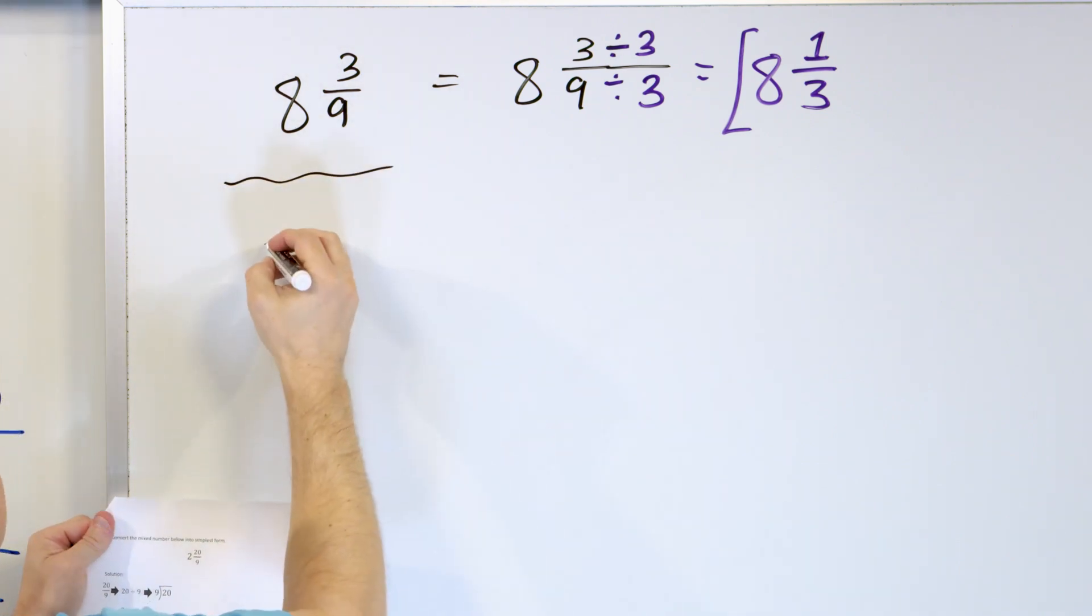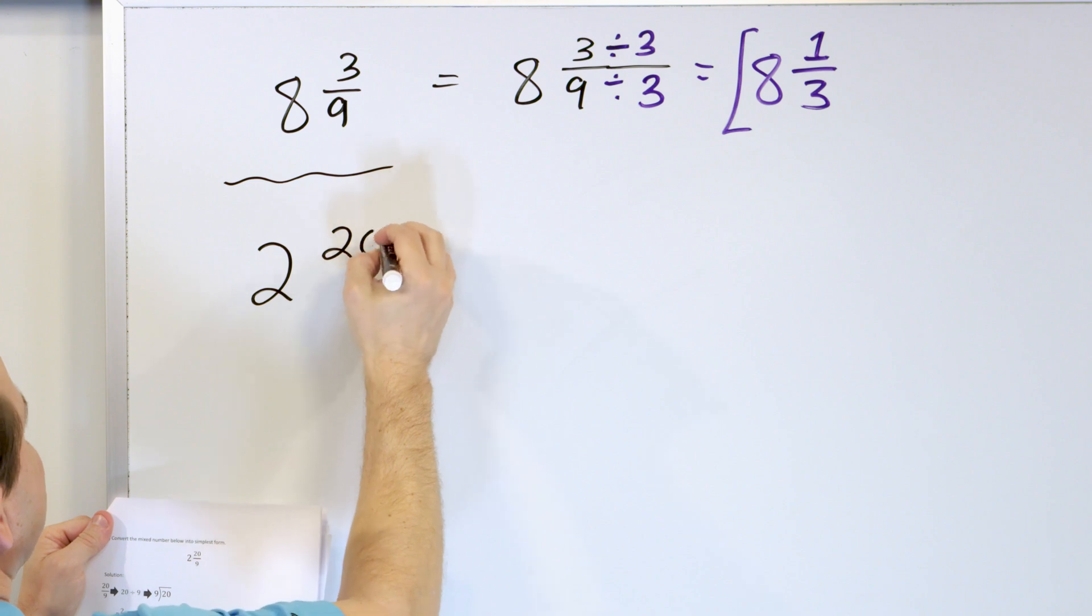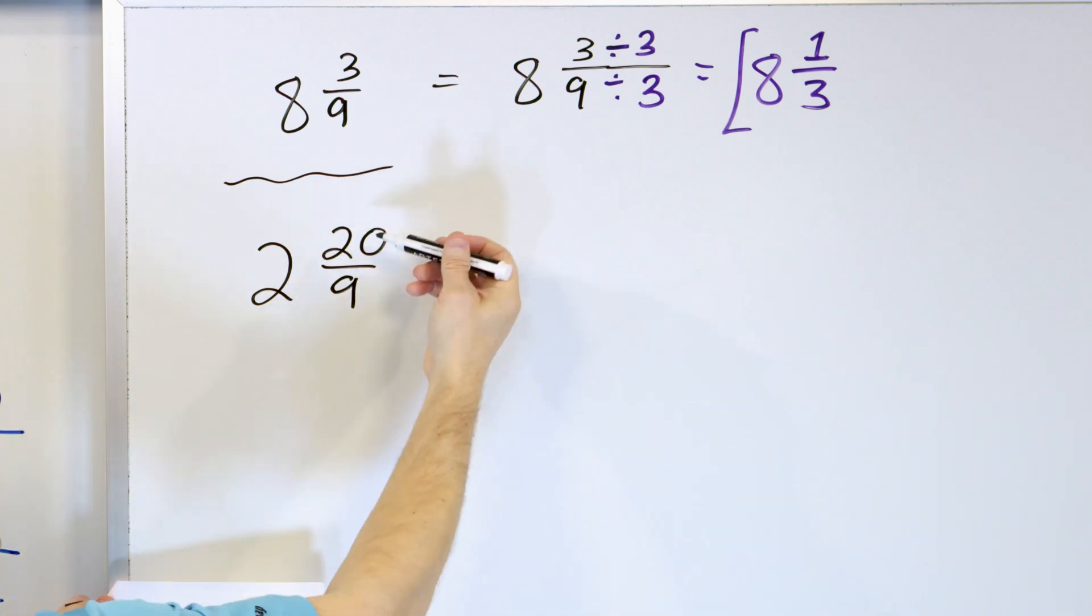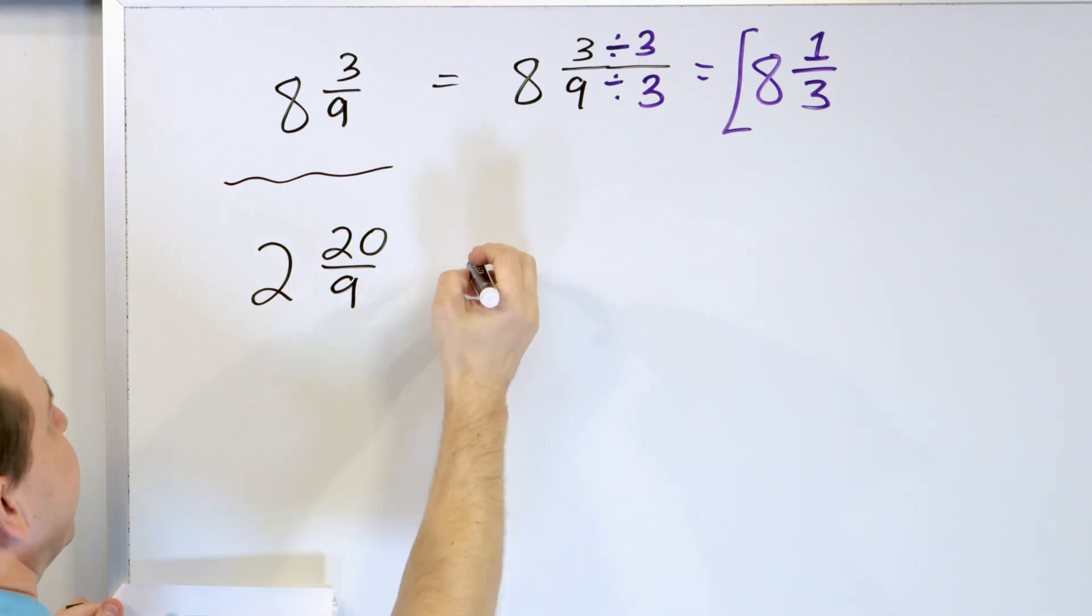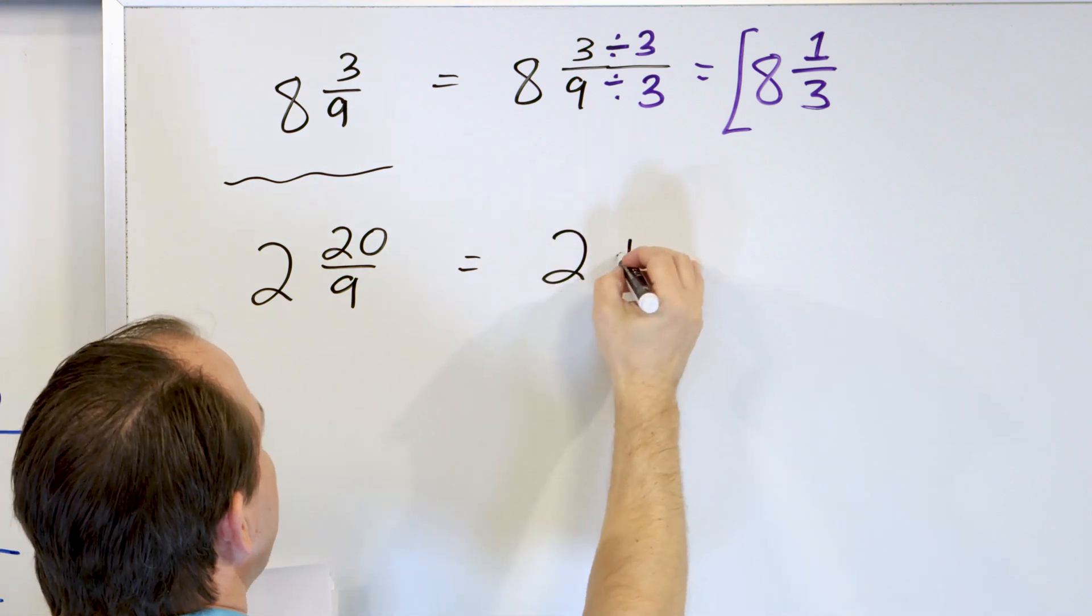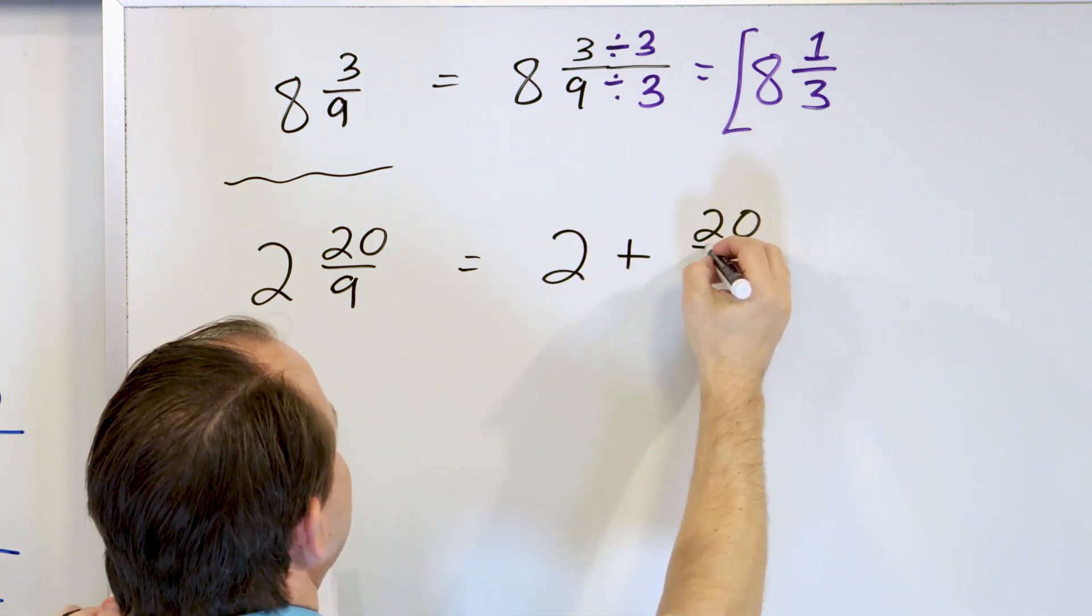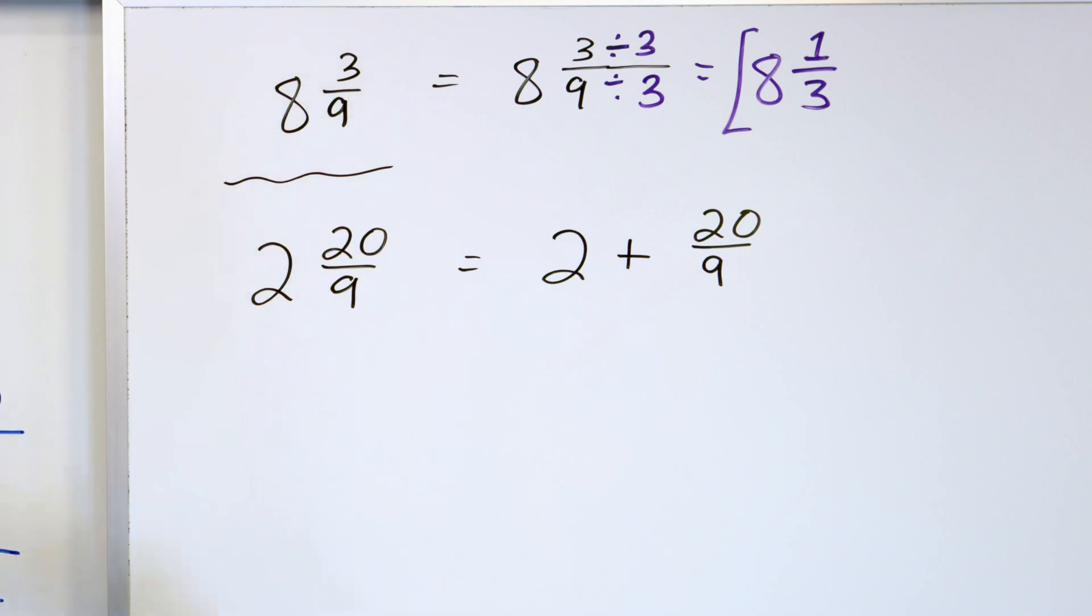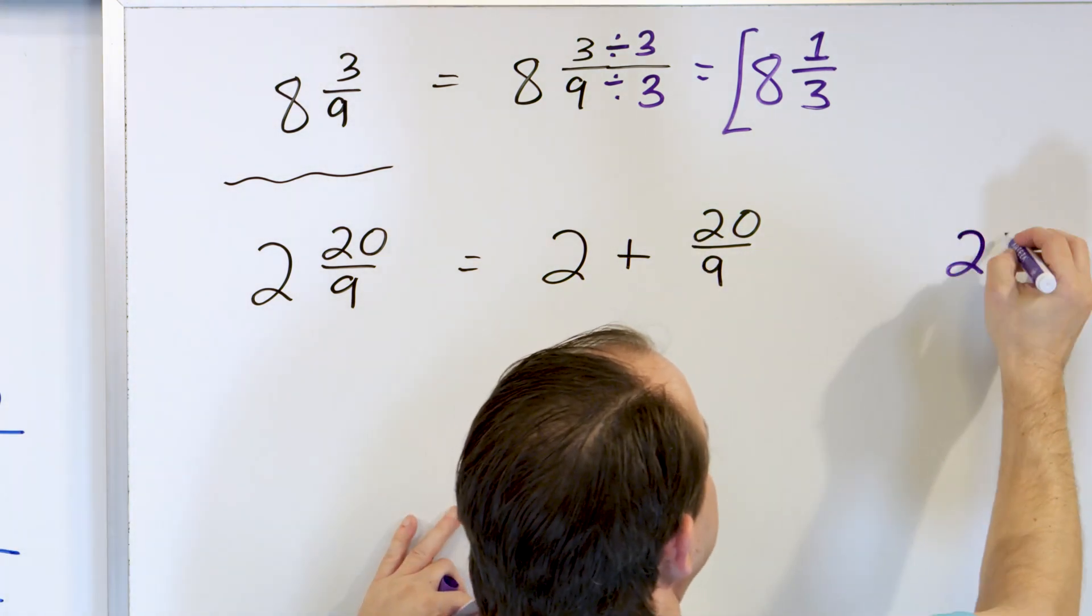Let's take a look. What happens if we have something like 2 and 20/9ths? So we again see we have this improper fraction here. So in our mind we think that this is like two whole pizzas plus whatever 20/9ths works out to be. How do we figure out 20 over 9? We divide.